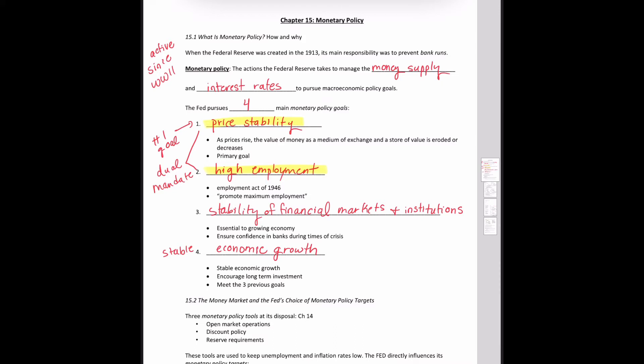Let's talk now about the money market and the Fed's choice of monetary policy targets. The three tools introduced earlier are open market operations, discount policy, and reserve requirements, which you should have read about in Chapter 14. These tools are used to keep unemployment and inflation rates low by influencing two specific monetary policy targets: the money supply and the interest rate.